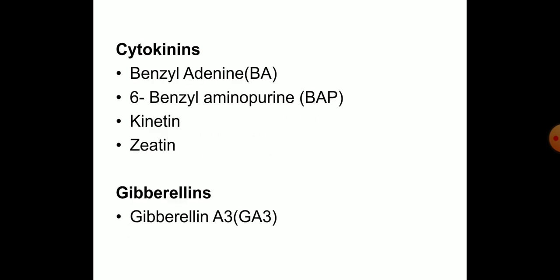Cytokinins like benzyl adenine, benzyl aminopurine, kinetin, and zeatin promote cell division and regulate growth and development. Gibberellin is used in apical meristem.